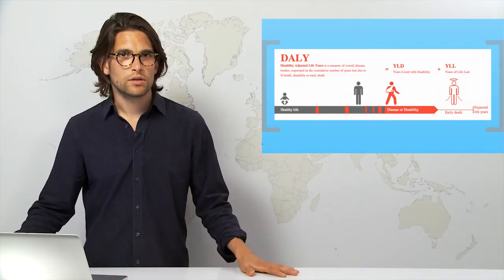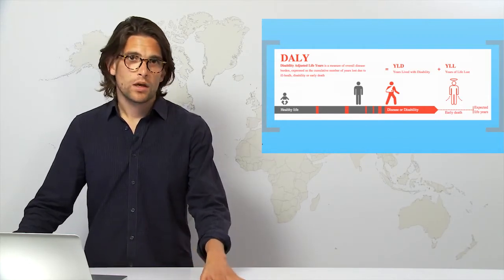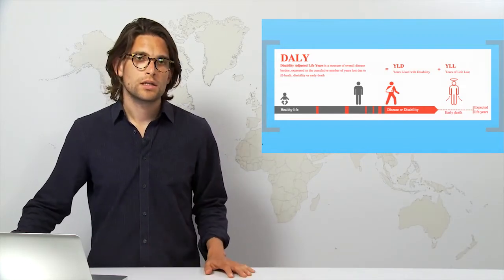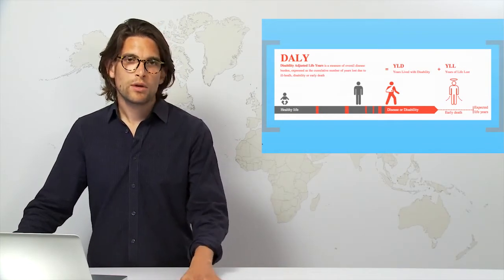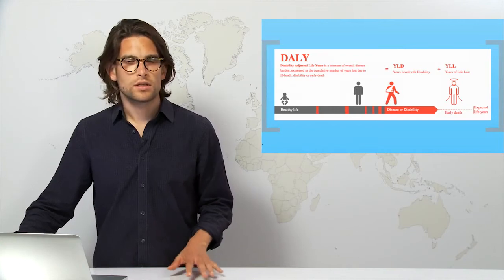And if they have times of disability or disease in their life we use a fraction of a simple measure to work out how many years of life lost to disability that corresponds to depending on the disease.